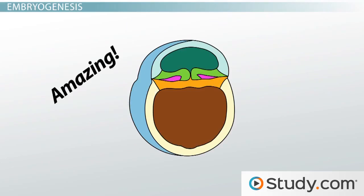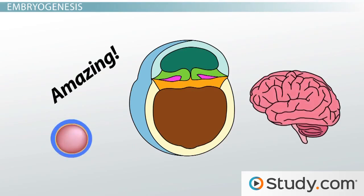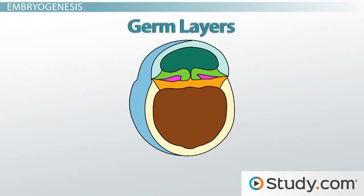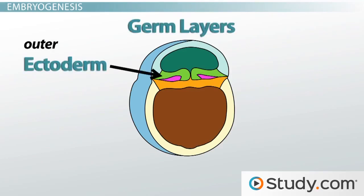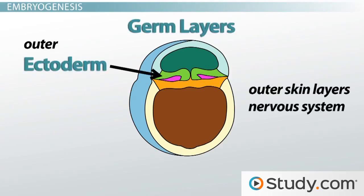Amazing, right, that all of your organs, whether as simple as a single cell or as complex as your brain, all of them come from this tiny, microscopic ball of cells. The outer ectoderm cells become structures like your outer skin layers and your inner nervous system cells.